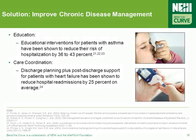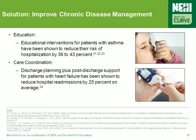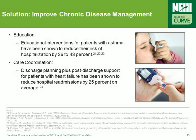A final promising way to decrease hospital admissions for ambulatory care sensitive conditions relates to policy actions that can improve chronic disease management. A two-pronged approach focusing on education and care coordination is effective. Educational interventions for patients with asthma have been shown to reduce the risk of hospitalization by 36 to 43%. Discharge planning plus post-discharge support for patients with heart failure has been shown to reduce hospital readmissions for this population by about 25% on average.